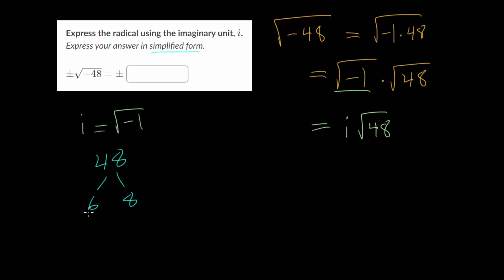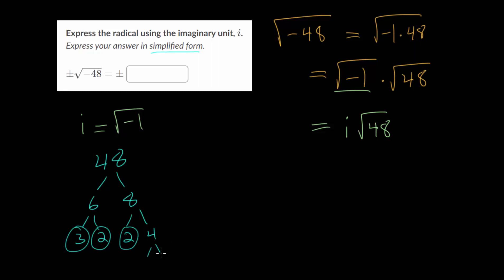Once you write down two numbers that multiply to 48, you break them down further until you end up with all prime factors. So 6 is a product of 3 and 2, and 8 is a product of 2 and 4. Once you get down to prime numbers, you can circle them to signify the end of the tree. Then 4 is a product of 2 and 2. Notice we multiply 2 four different times, so 48 is really 2 to the 4th multiplied by 3.